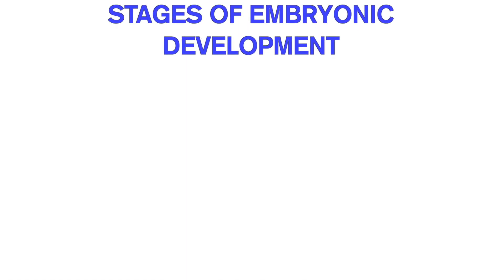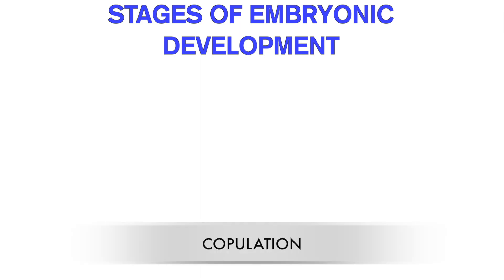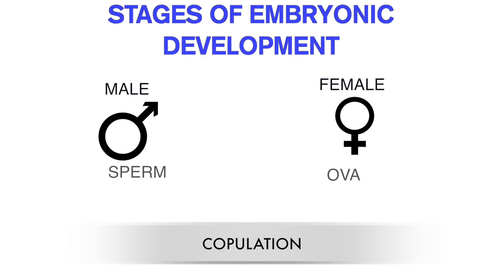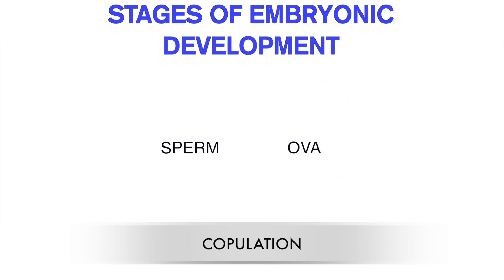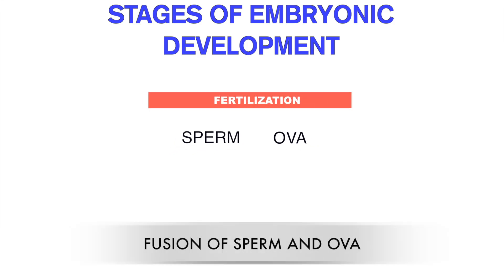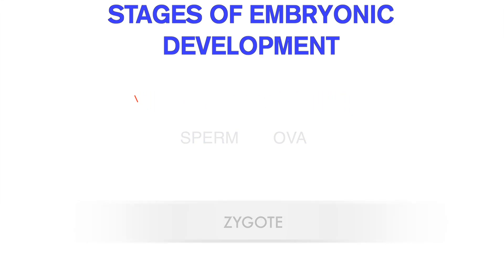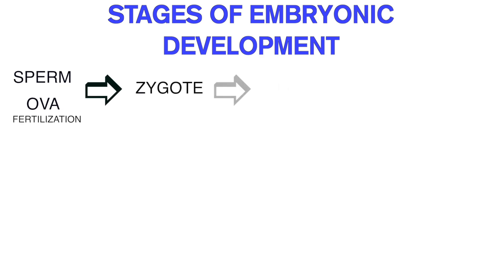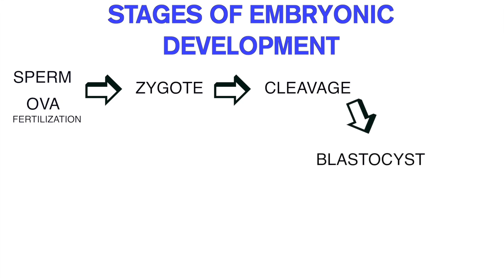Before we try to understand the concept of embryonic diapause, let's see the stages of embryonic development under normal conditions. When mating or copulation occurs between male and female, the sperm and ovum fuse together to form a zygote. After that, cleavage in the zygote proceeds through the morula and blastula stages, and finally cell division continues to give us the blastocyst stage.